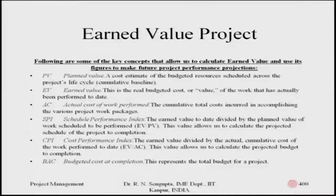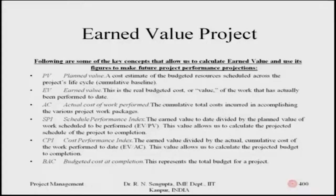The Cost Performance Index (CPI) is essentially EV divided by the actual cumulative cost of work performed to date — the second bullet point divided by the third. This value allows us to calculate the projected budget to completion. SPI and CPI are two different ratios that give an idea of how work is going theoretically versus practically, indicating the gap on which corrective actions should be based.